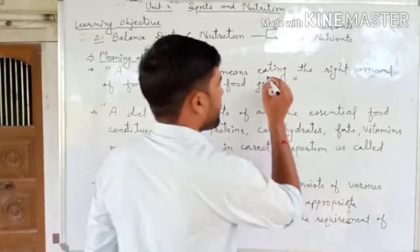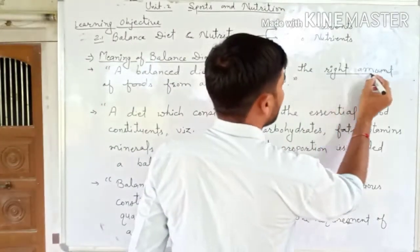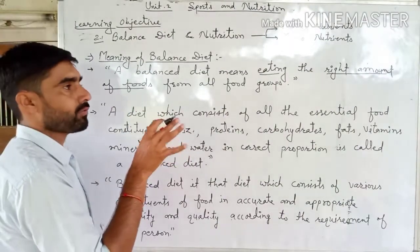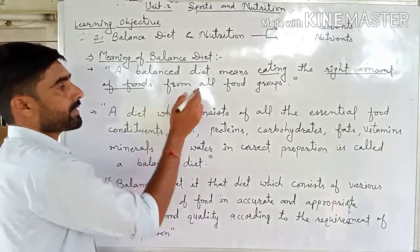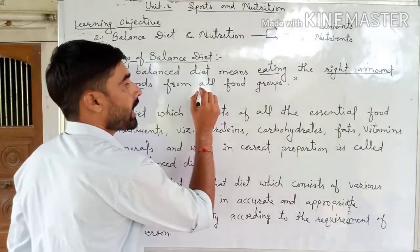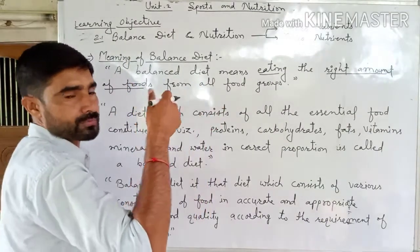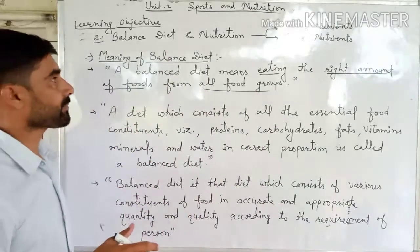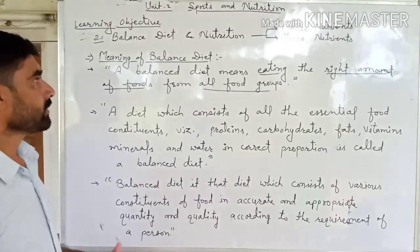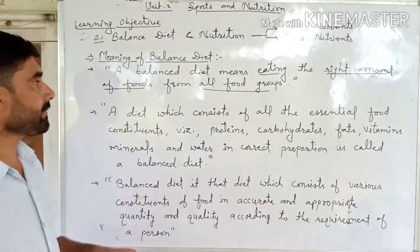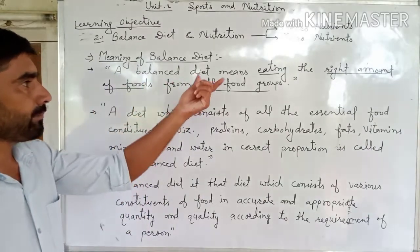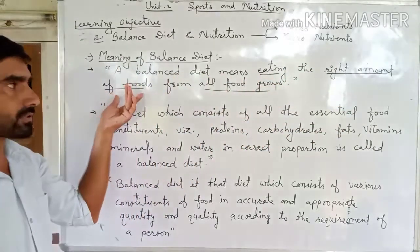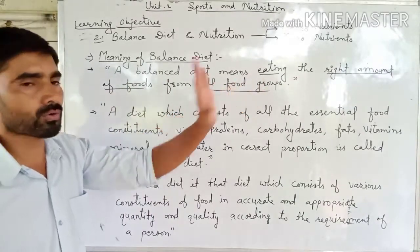It means that we have to eat the right amount of food — not from one food group, but from all food groups. That is what a balanced diet means: eating the right amount of foods from all food groups.